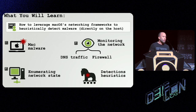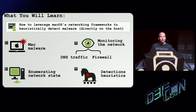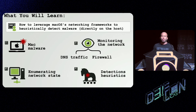What will you learn today? Pretty much four things that will show us how to leverage macOS's and Apple's networking frameworks to heuristically detect malware directly on a host. We'll start with examples of Mac malware that utilize the network. We'll then talk about how to take a snapshot and enumerate the network state on a Mac to see active connections, open sockets, et cetera. Then we'll graduate up to more comprehensive tools that allow us to continually monitor the network — both DNS traffic and all traffic, including filtering and blocking certain connections. Finally, we'll tie that activity back to processes and determine if those processes are suspicious or malicious, because legitimate software is also going to be using the network, so we need a way to identify what is unauthorized.